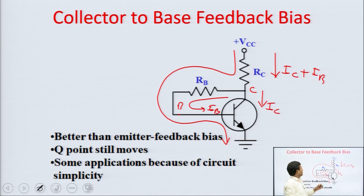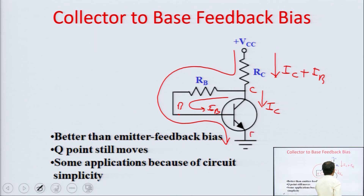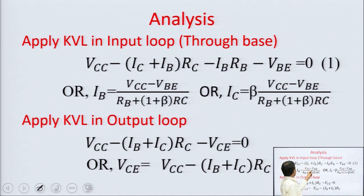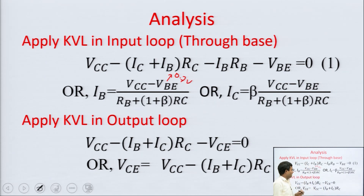Writing the input KVL equation: VCC minus (IC plus IB)·RC minus IB·RB minus VBE equals zero. This is equation 1. From this, rearranging gives IB equals VCC minus VBE upon RB plus (1 plus β)·RE. VBE is taken as 0.7 V for the active region if not given. From this, IC equals β·IB.